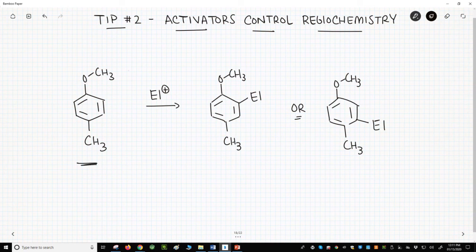This benzene ring on the left has two R groups, a methoxy and a methyl. If we react this benzene with an electrophile, the methoxy is activating the two ortho carbons. The para position relative to methoxy is blocked. And the methyl is activating its two ortho carbons. Para is blocked. All the carbons are activated. Which wins?